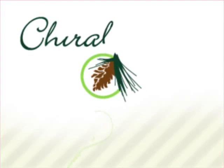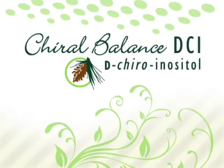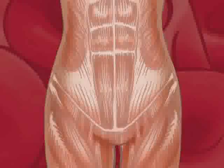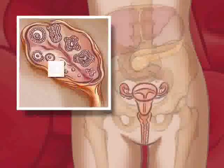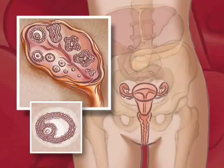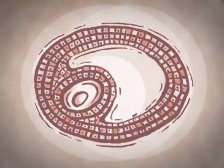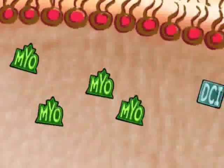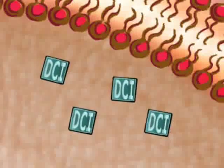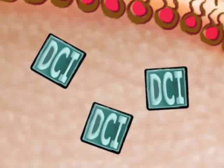This is an instructional video about the role that d-chiroinositol plays in insulin metabolism and polycystic ovarian syndrome. First, let's introduce some of our important players. The cells we're concerned with are the muscle and fat cells found throughout the body, and the theca cells of the ovaries, which produce testosterone. The small molecules are glucose, insulin, myoinositol, and d-chiroinositol — or DCI for short.